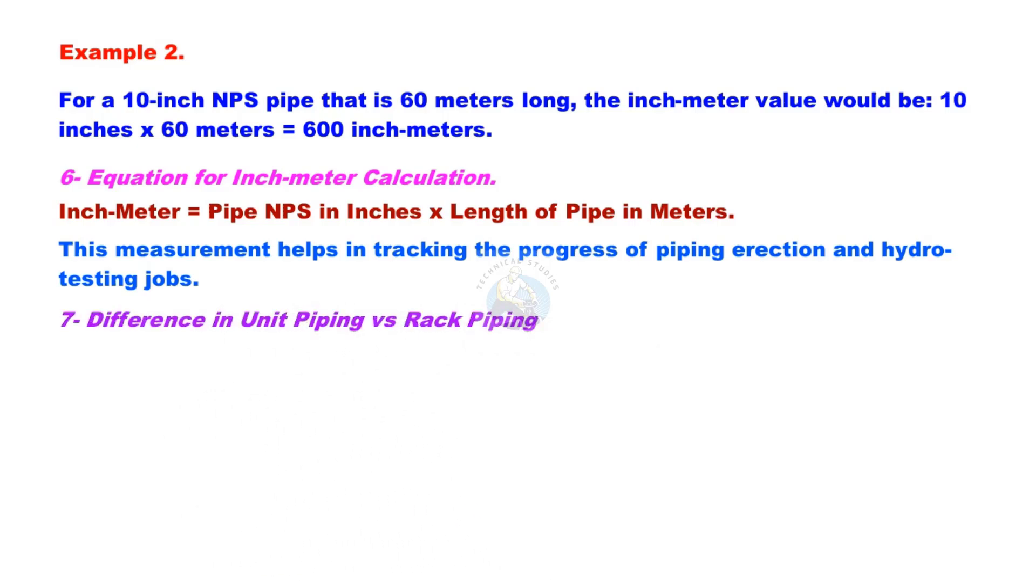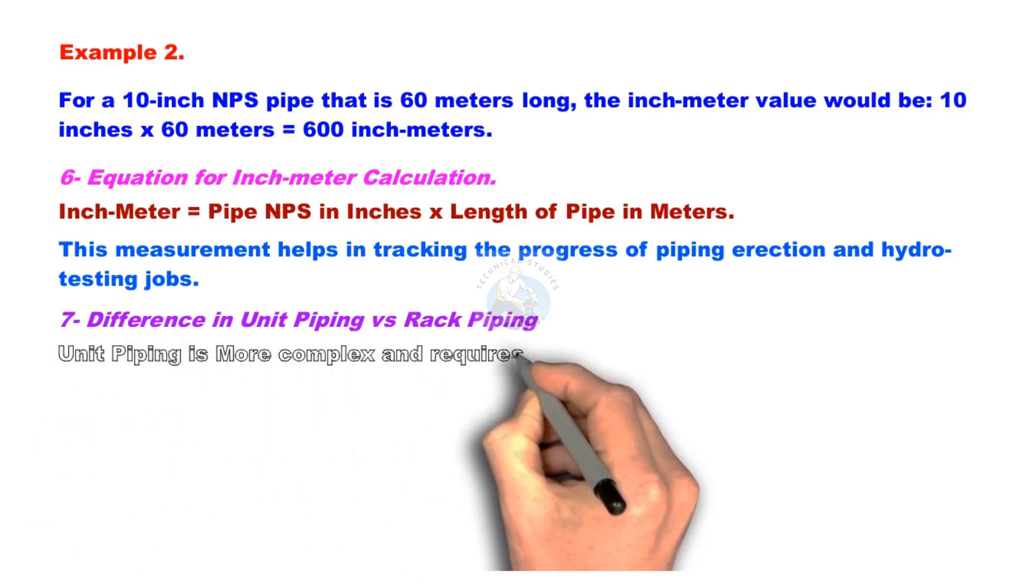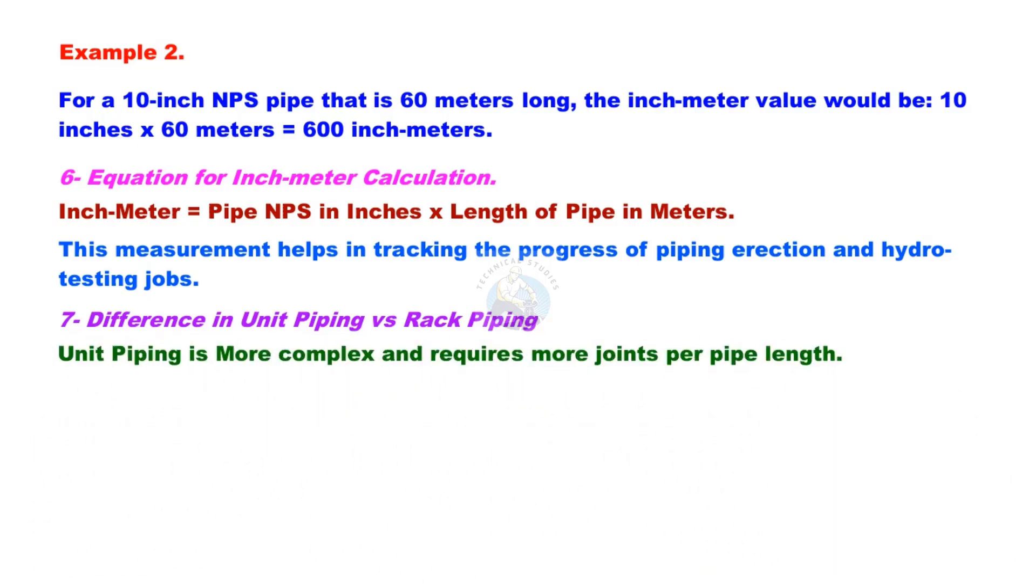What is the difference between piping in a unit and piping on a pipe rack? Unit piping is more complex and requires more joints per pipe length.